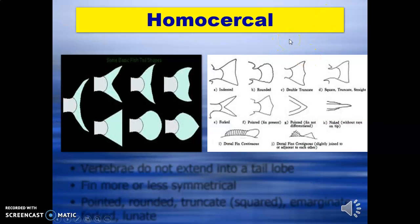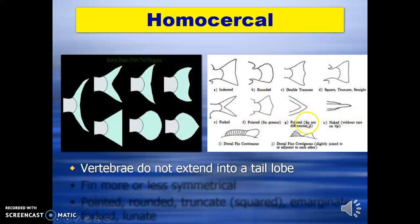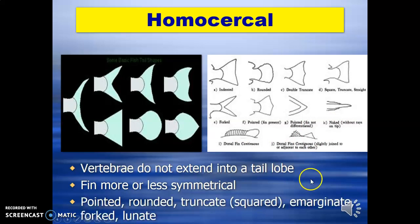Now we come to the tail fin. The first type is called homocercal, where the tail is evenly distributed and cleaved into a forked tail — the vertebrae do not extend into the tail lobe. Types include lunate, rounded, double truncate, square, truncate, straight, and forked tail. These are some of the types of homocercal caudal fin.